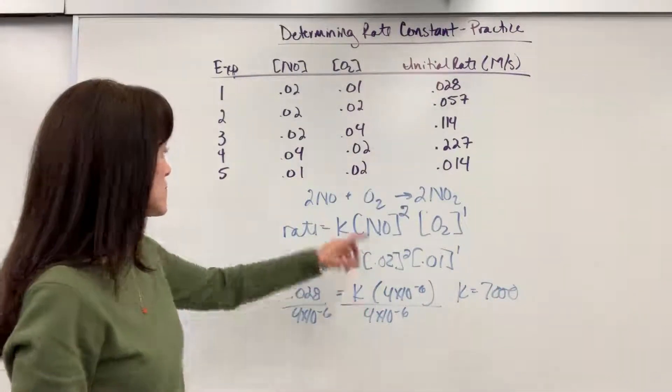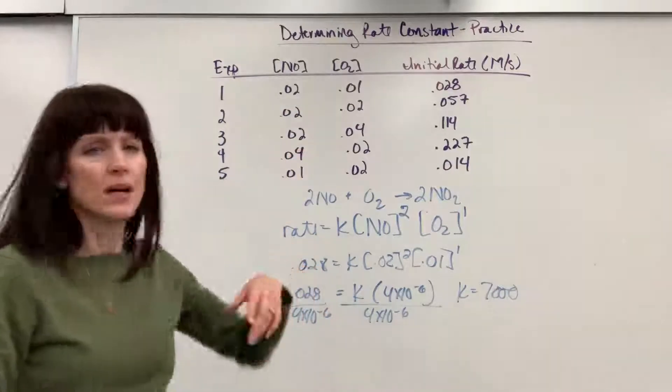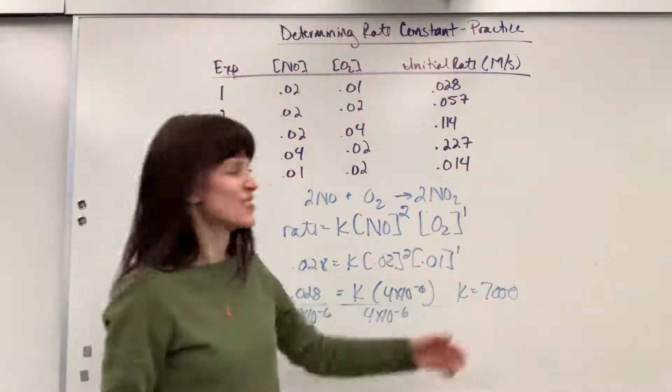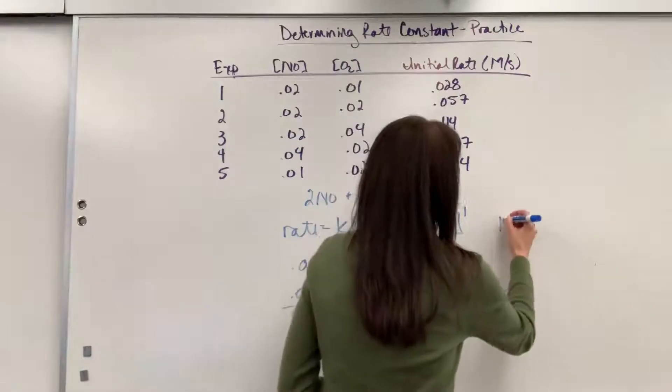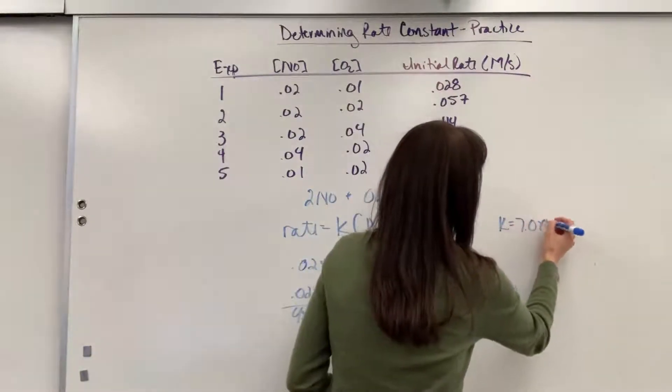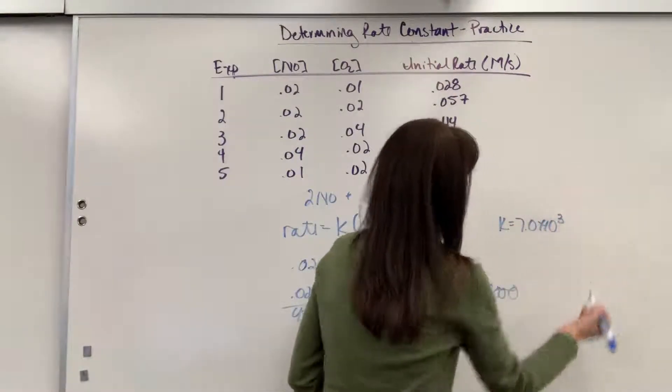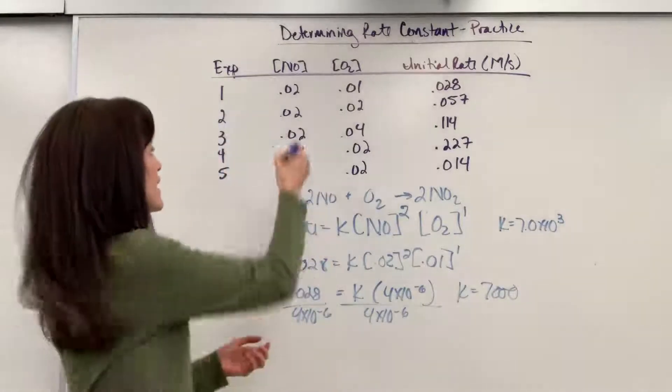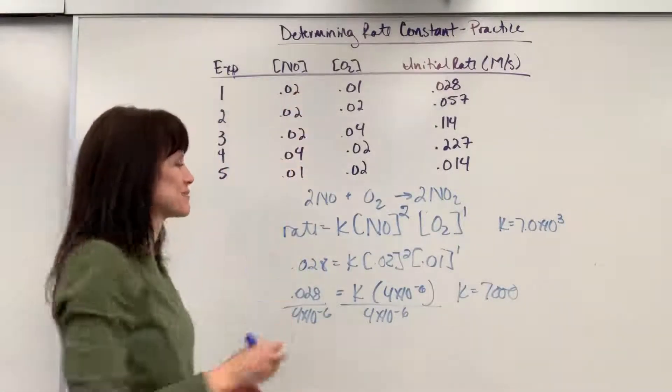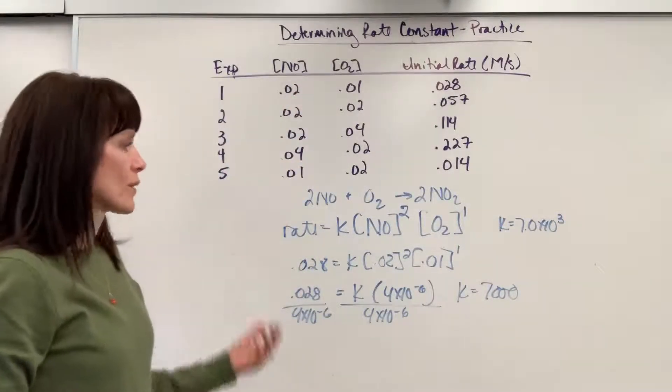These actually had zeros on them. It was two sig figs. I didn't write it out. Let's write this as two sig figs. I'll write it up here. K equals 7.0 times 10 to the 3, and that should be showing two sig figs if I had a zero on the end of all of these.